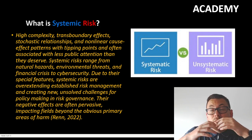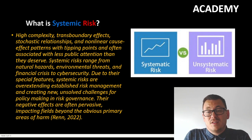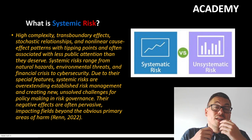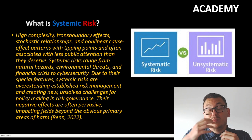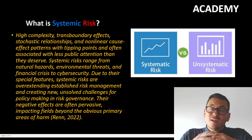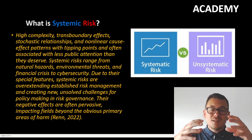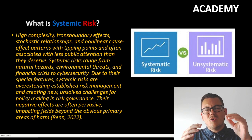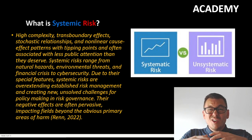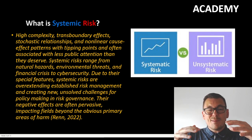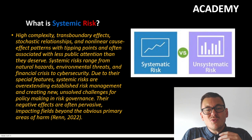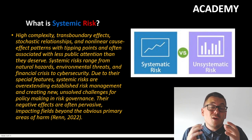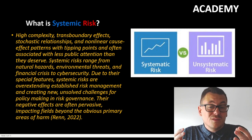Some examples of systemic risk can be environmental threats and financial crises — we know that from 2008. Due to their special features, these systemic risks overextend already established risk management and create new unsolved challenges for policymakers in risk governance.